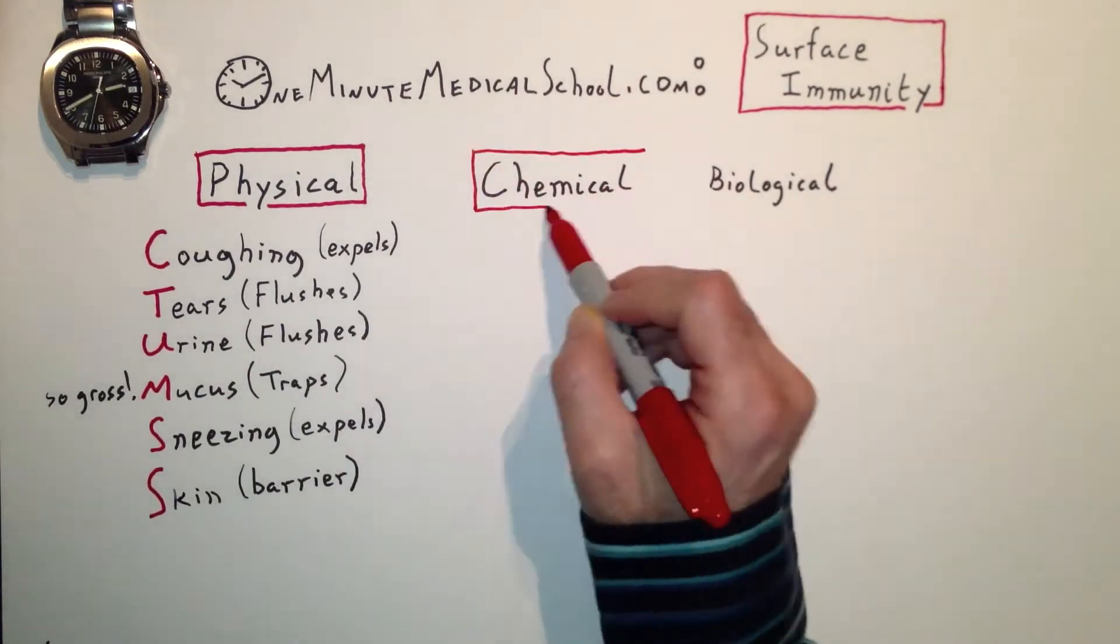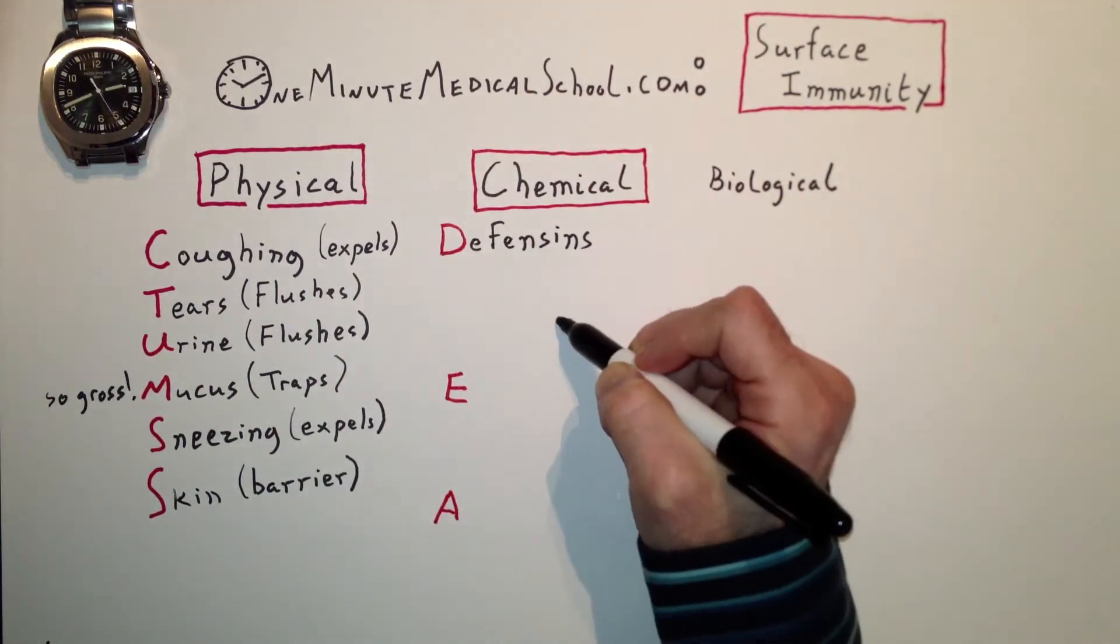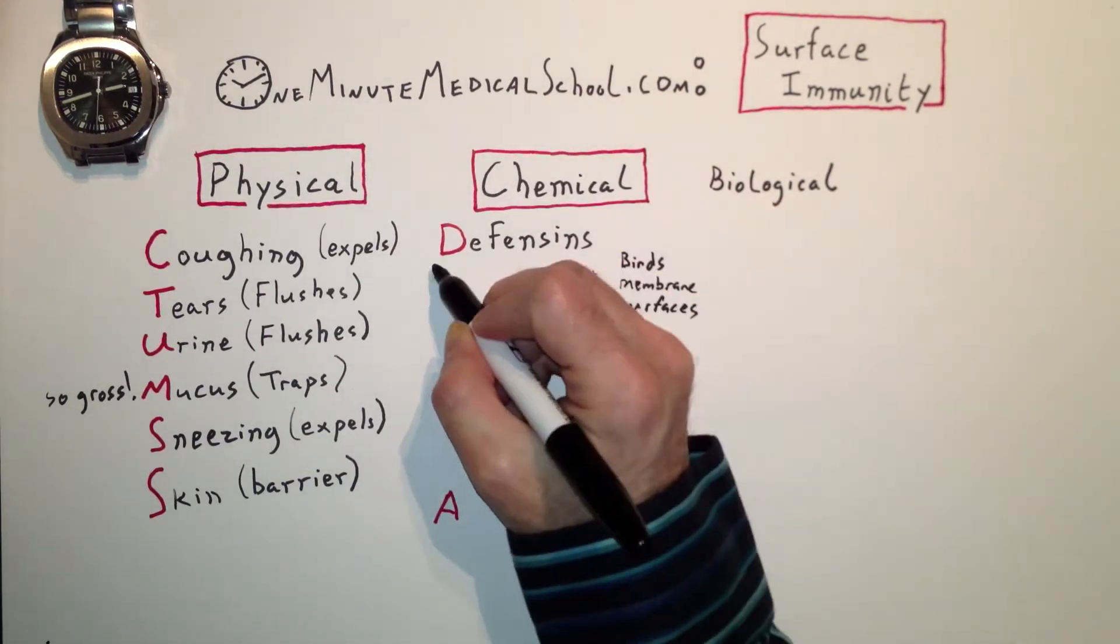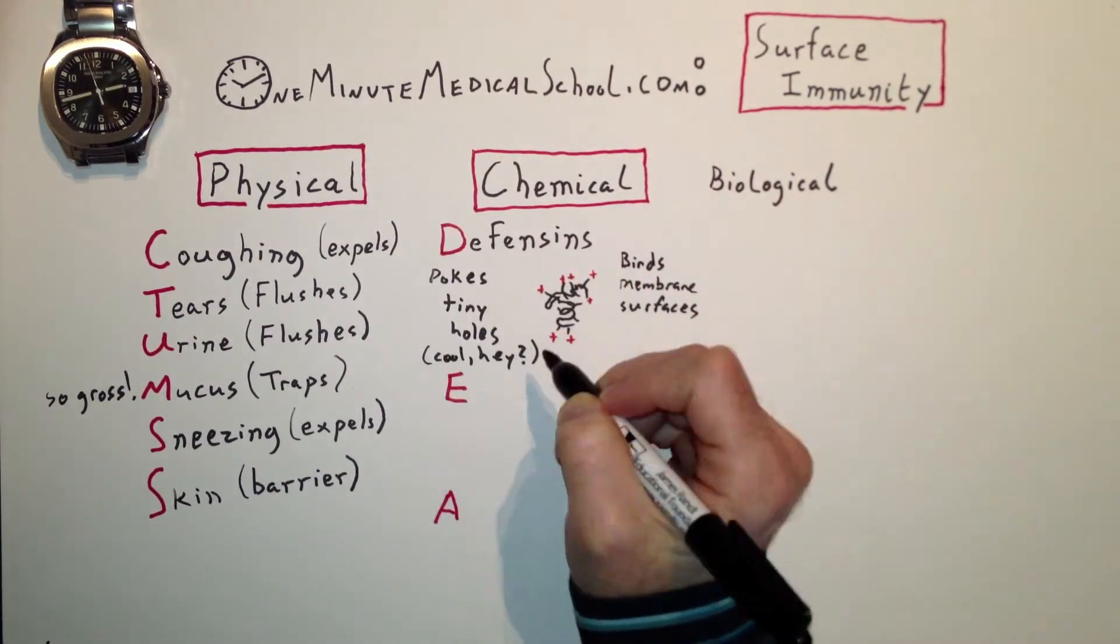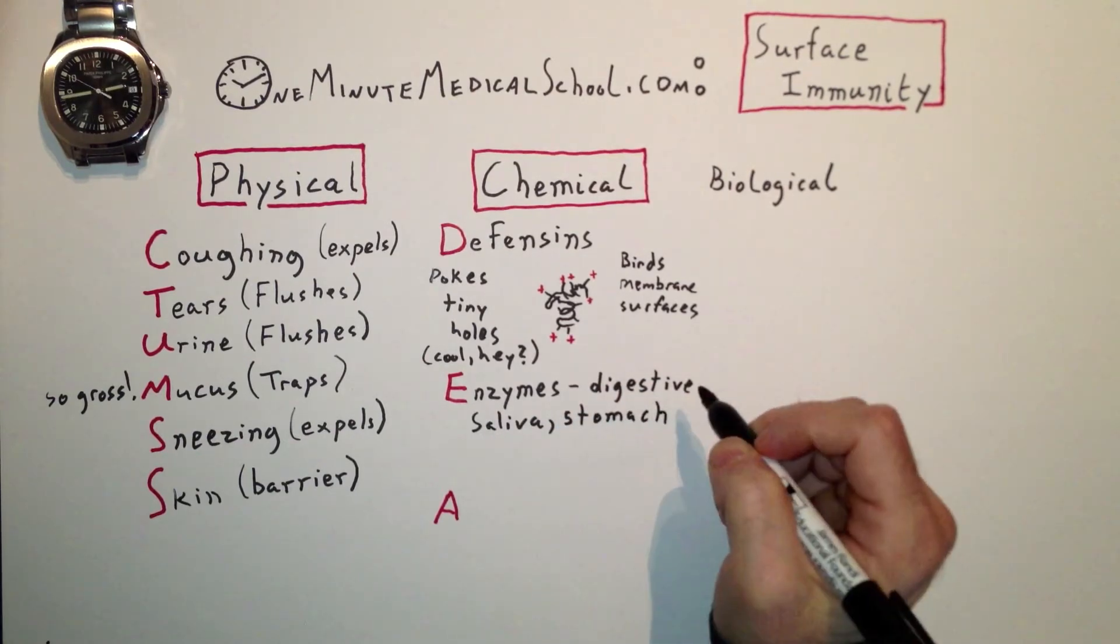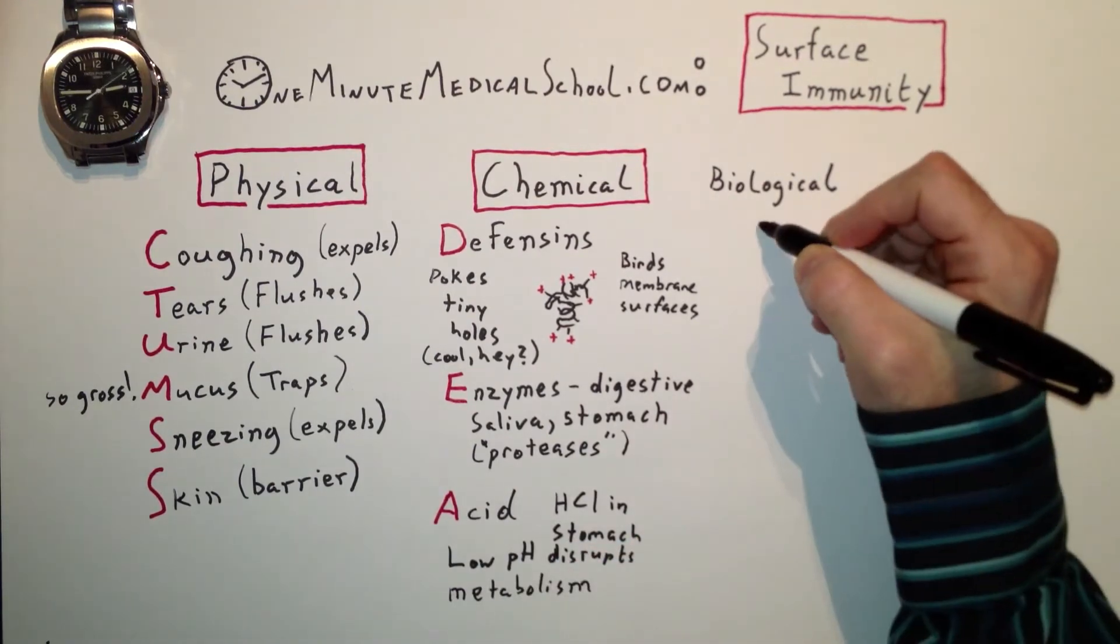Skin acts as a barrier against pathogens. Chemical immunity is the DEA. D is for defensins—proteins secreted on your skin and gut that bind to membrane surfaces and poke holes in them. E is for enzymes—digestive enzymes in your stomach and saliva that break down proteins in food and bacteria. A is for acid—stomach acid causes direct metabolic disruption.